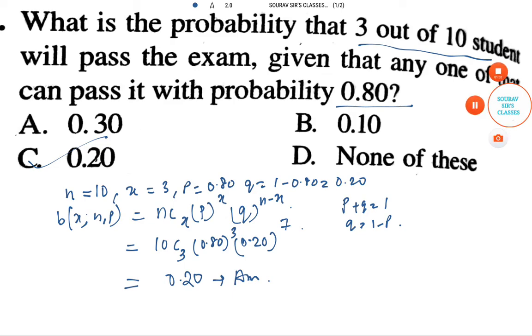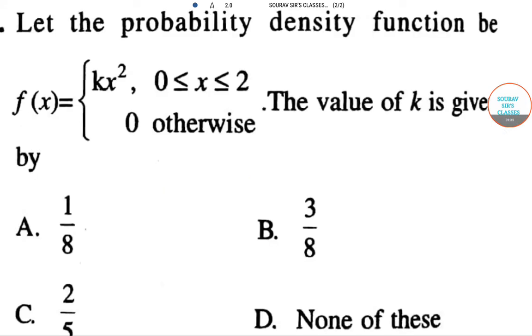Our next sum is again based on probability. Let the probability density function be f(x). f(x) is given by kx square when the value of x is greater than or equal to 0, less than or equal to 2, and 0 otherwise. The value of k is given by: